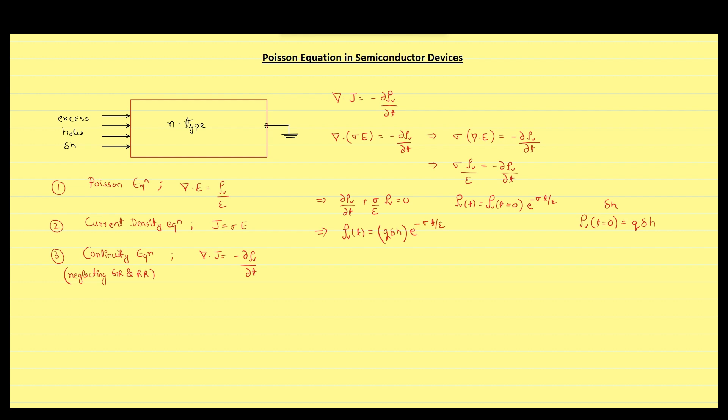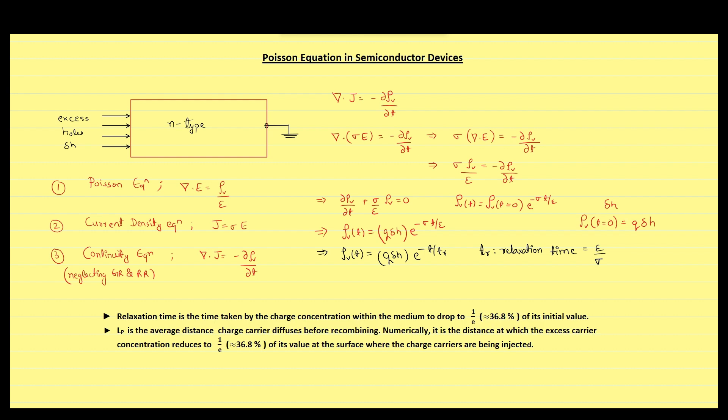This equation can also be written as an exponential decay. Here, Tr is the relaxation time which is equal to permittivity of the semiconductor divided by conductivity of the semiconductor. Relaxation time is the time taken by the charge concentration within the medium to drop to 1 upon e times of its initial value, where e is the Euler number which is the base of the natural logarithm function.